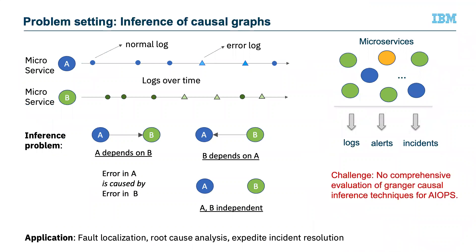So the problem setting is as follows. Imagine that you have a large IT system possibly running on the cloud that consists of tens or hundreds of microservices, and each of these microservices emits a log message over time. IT systems typically face faults from time to time, and when that happens, usually an incident ticket is created and a group of IT engineers get together to resolve that fault at the earliest.